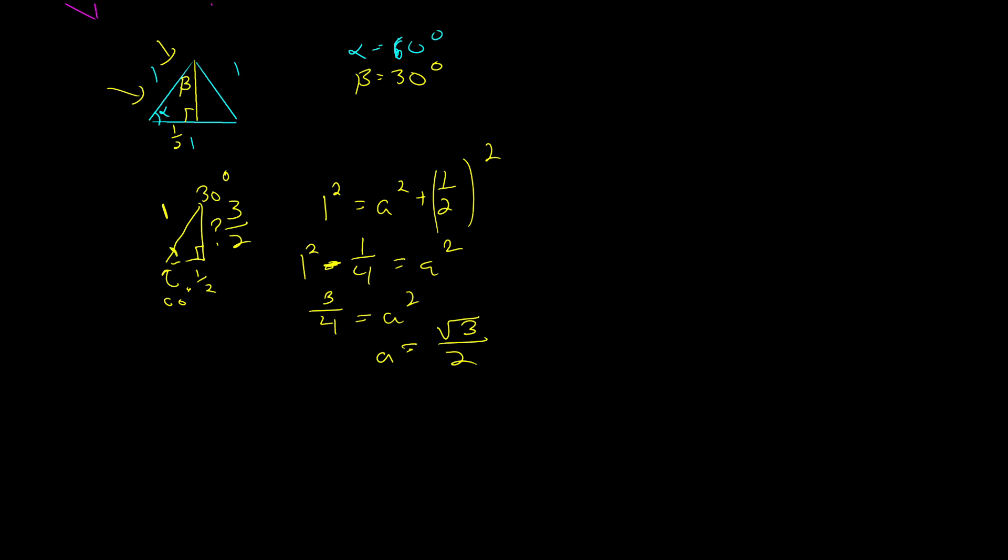And so I can use my SOHCAHTOA. And so what I'm going to do is I'm going to start with the 30 degree. So for 30 degrees, the sine, and we'll look at 0 degrees, 45 degrees, 60 degrees, and 90 degrees. But for right now, we're looking at 30 degrees. And we're going to find the sine, the cosine, and the tangent. Now, SOHCAHTOA said that the sine is the opposite over the hypotenuse, or one half over one. So sine of 30 degrees is one half. The cosine of 30 degrees is adjacent over hypotenuse, or three halves.